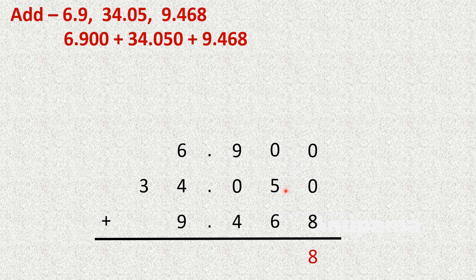Hundredths: 0 plus 5 is 5, plus 6 is 11 — write 1, carry 1. Tenths: 9 plus 1 is 10, plus 0 is 10, plus 4 is 14 — write 4, carry 1. We write the decimal point, then the ones column: 6 plus 1 is 7, plus 4 is 11, plus 9 is 20 — write 0, carry 2.